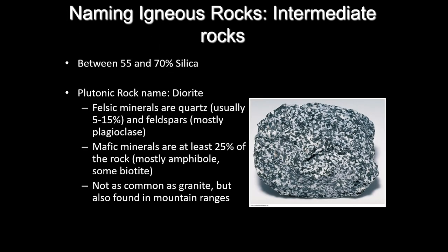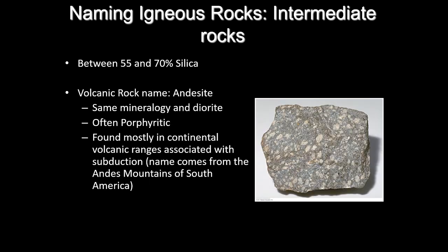Moving into intermediate end members: diorite is the phaneritic intermediate rock from an intrusive environment, common in the continental crust with a mix of light and dark minerals and about 25% mafic minerals. The intermediate aphanitic equivalent is andesite — what makes up volcanoes like Mount St. Helens. A porphyritic andesite shows larger light-colored phenocrysts in a fine-grained matrix, representative of two-stage cooling before extrusion onto the surface.